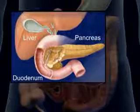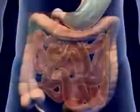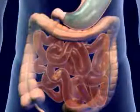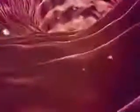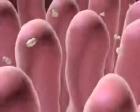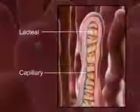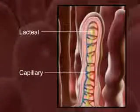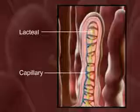This completes the chemical process of digestion. The walls are covered with villi where nutrient absorption takes place. The structure of each villus contains a capillary and lacteal to pick up the digested nutrients.